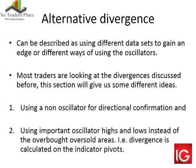Alternative divergence can be described as using different data sets to gain an edge, or different ways of using the oscillators. Most traders look at the divergences discussed before this section. Here we look at some different ideas. The first is using a non-oscillator for direction or confirmation — more of an analysis tool than a trade-now idea. The second is looking at important oscillator highs and lows instead of divergence in the overbought or oversold areas, calculated using the indicator's pivot points — not price pivot points — which can be in between the overbought and oversold areas.